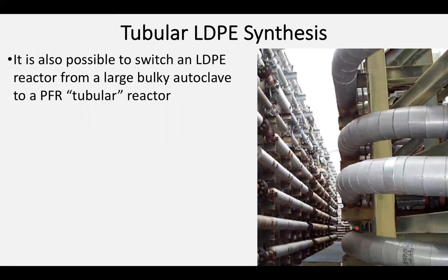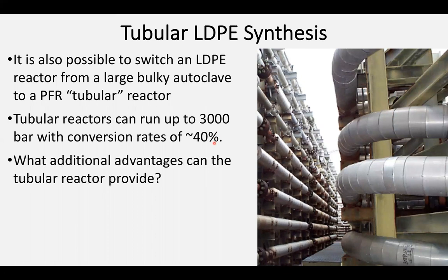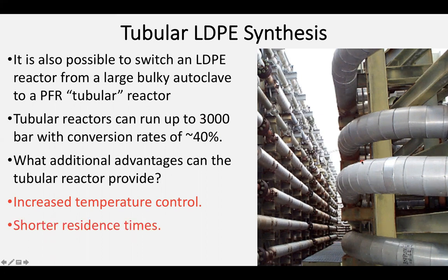It's also possible that instead of using a semi-batch or CSTR reactor, we can switch to a tubular reactor — essentially a plug flow reactor. These tend to also work at fairly high pressures, often a little bit higher, and as a consequence they tend to have slightly higher conversion rates. The higher external surface area gives much better temperature control — I'm much less in need of a cooling jacket, as air alone may be sufficient. And as we saw with the advantages of flow reactors or using multiple CSTRs, we can also decrease the residence time by increasing the relative catalytic efficiency of the system.